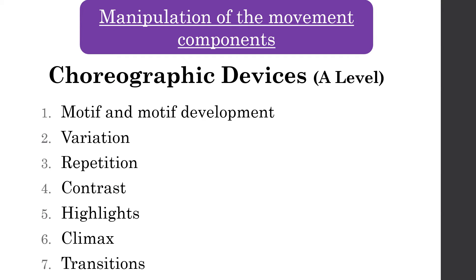Today I just want us to be very clear on the choreographic devices and how we can use them to achieve that seven to eight top mark band. There are seven choreographic devices laid out in the specification that you need to know: number one is motif and motif development, number two is variation, number three is repetition, number four is contrast, number five is highlights, number six is climax, and number seven is transitions.